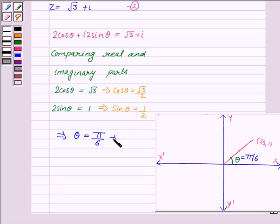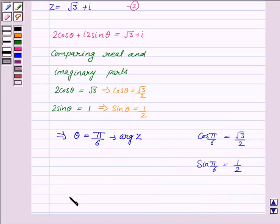That means the argument of z is pi by 6. Hence z in polar form is given by r, that is 2, into cos pi by 6 plus iota sin pi by 6.